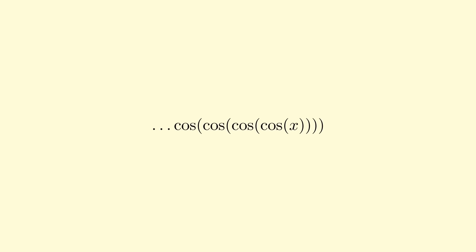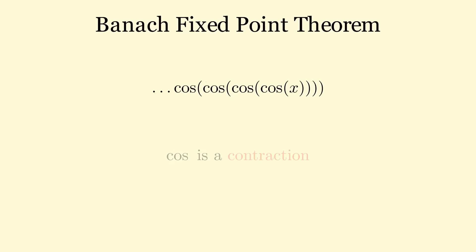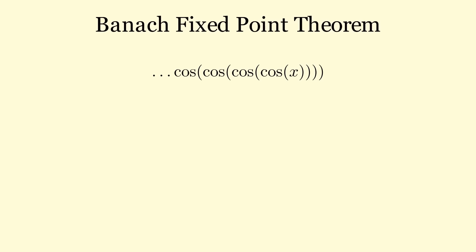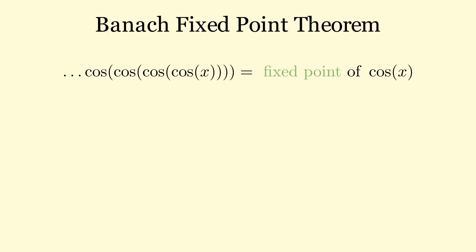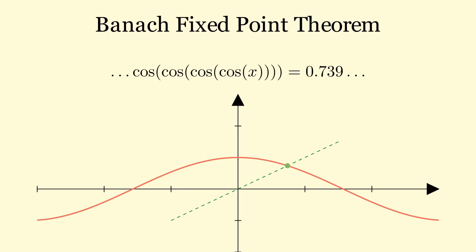To finish off this video, I'd like to take a look at a really cool application of this theorem. If you want to see what happens when you apply cosine an infinite number of times to any number, we can use the Banach fixed point theorem. All we need to notice is that cosine is a contraction from the real numbers to the real numbers, which is a complete space. So this infinite expression will be equal to the fixed point of cosine of x. If we graph it and calculate what the fixed point is, we know that this expression is equal to 0.739. I hope this video has showed you how cool fixed point theorems can be — please leave a like, and thank you for watching.